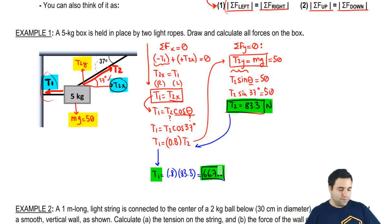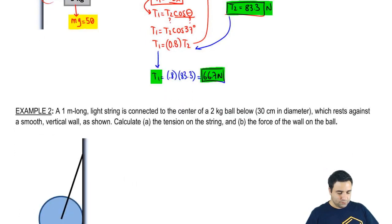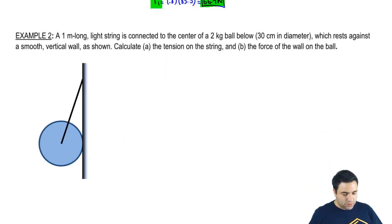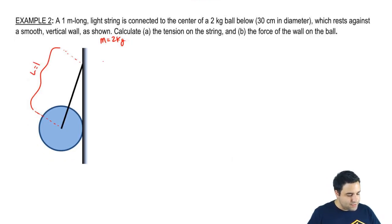You're going to say left equals right, top equals down, and try to solve for what you're looking. Let's check out the next one. So here I have a one meter long string connected to the center of a two kilogram ball, and it is 30 centimeters in diameter. Remember in physics, we're always going to use radius, so let me convert that real quick. Which rests against a smooth vertical wall as shown. So I want to know the tension of the string and the force of the wall on the ball.